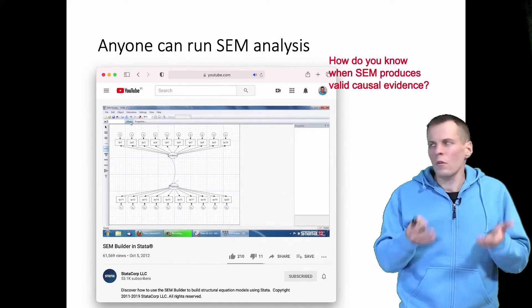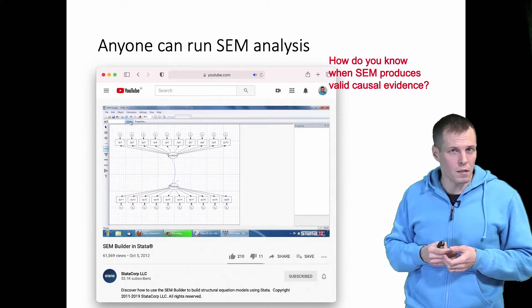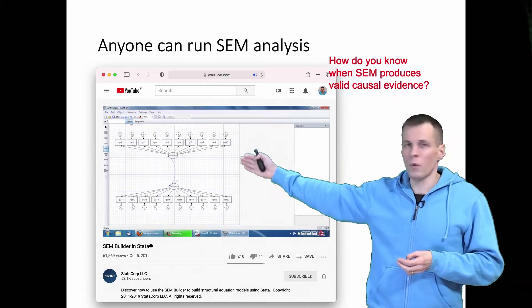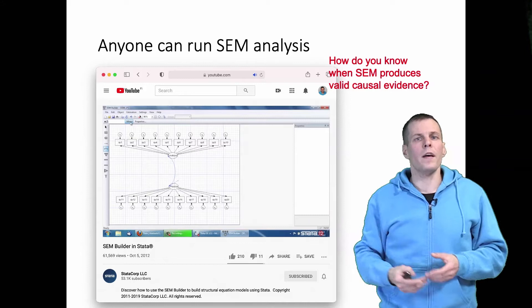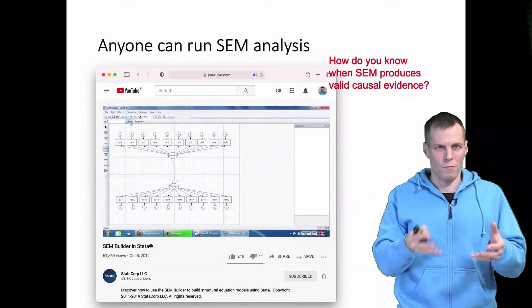For example, how do you know when a structural equation model produces valid causal evidence? We can of course specify however complex things we want using this kind of graphical tools, click a button and then the software produces some numbers. How do we know that we can actually trust those numbers?